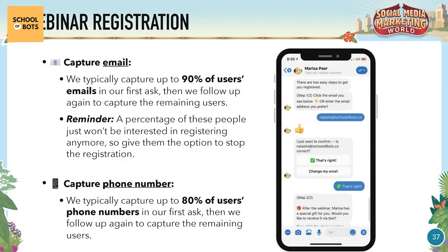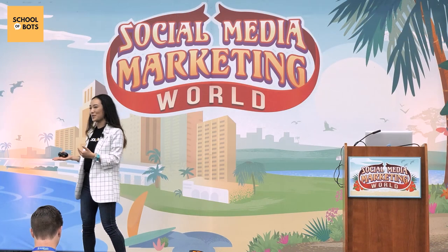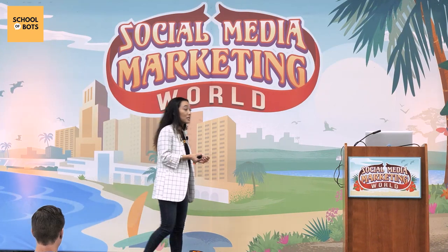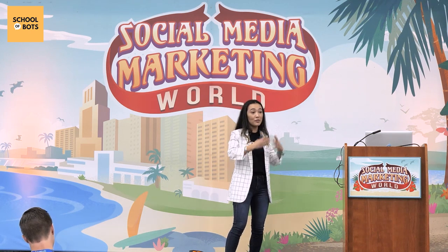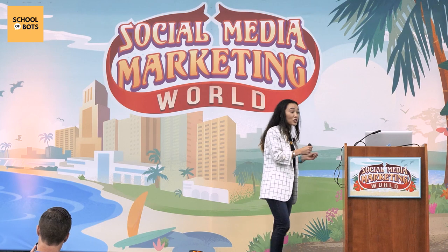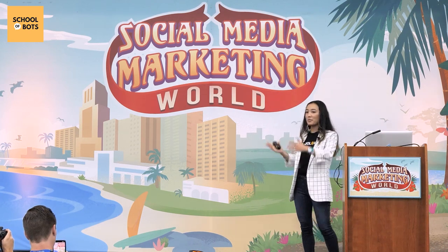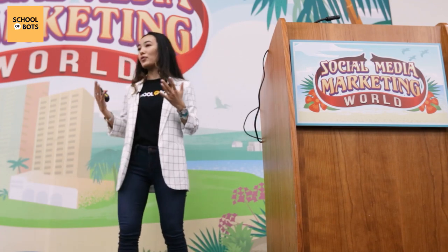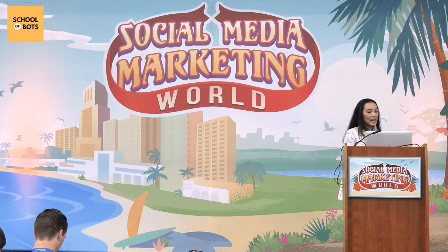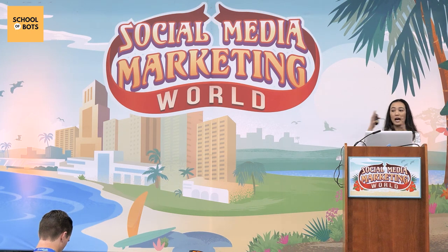For email, we typically capture up to 90% of users' emails on the first ask, then follow up to capture the remaining. A percentage of people won't be interested — just like someone might land on your webinar page and not register. In a conversation it's important to give people the option to say they're not interested, because that gives you an opportunity to segment them and send them to another webinar, another offer, or a freebie. There's never a negative to letting people stop if it allows you to serve them better.